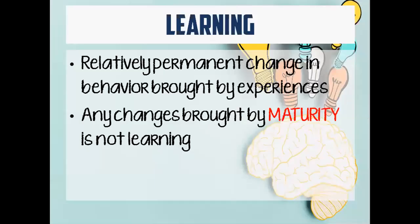The first thing that would come to our minds when we hear about the brain is not the slimy organ, but its importance in learning. When we define learning, it is a relatively permanent change in behavior brought by experiences. Relatively permanent change means if you have done a certain behavior and benefited from it, or gained something from it, or had a positive feedback, that behavior is more likely to be repeated. But if you were punished for a certain behavior or had a negative feedback from it, that behavior is unlikely to be repeated.